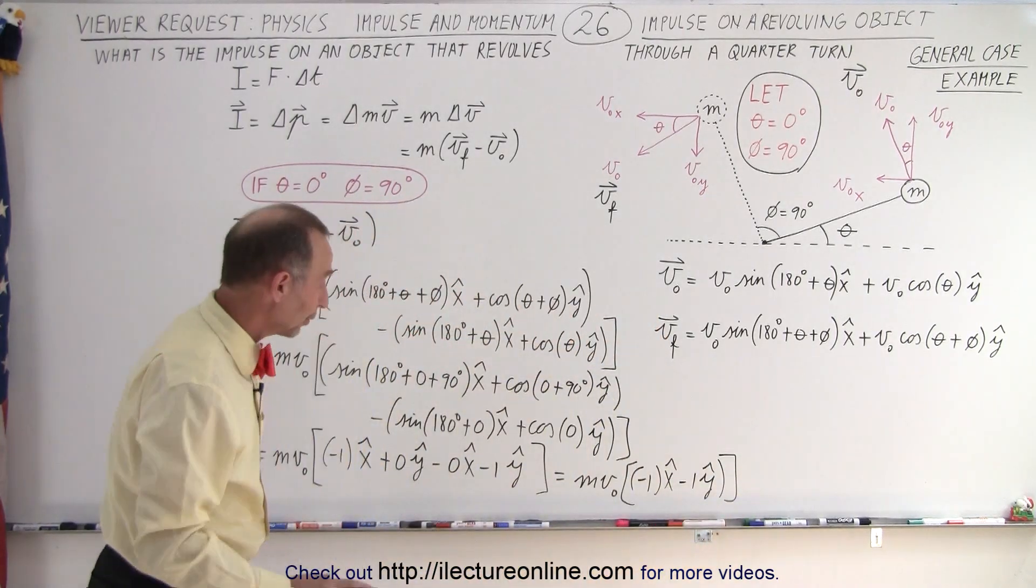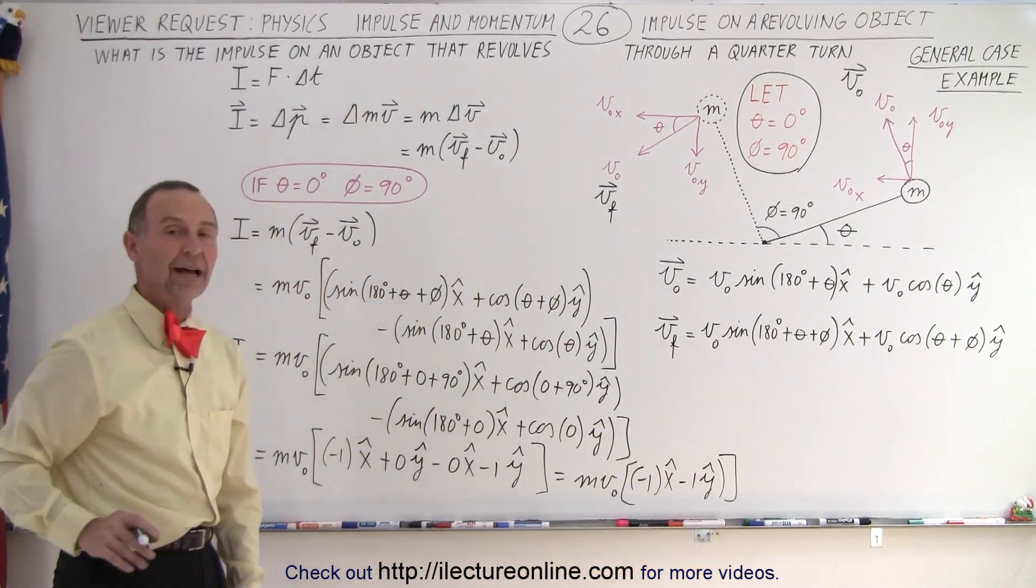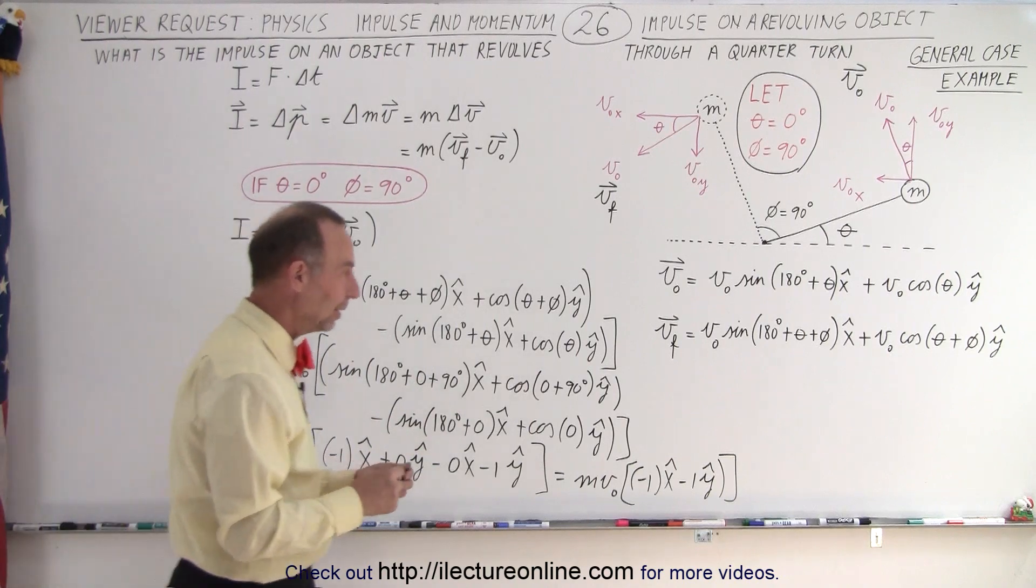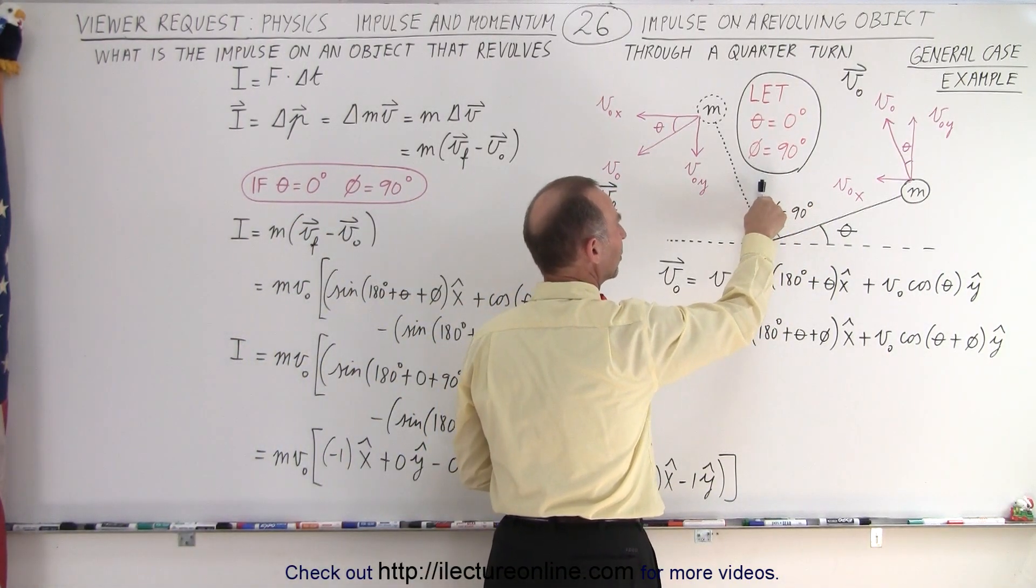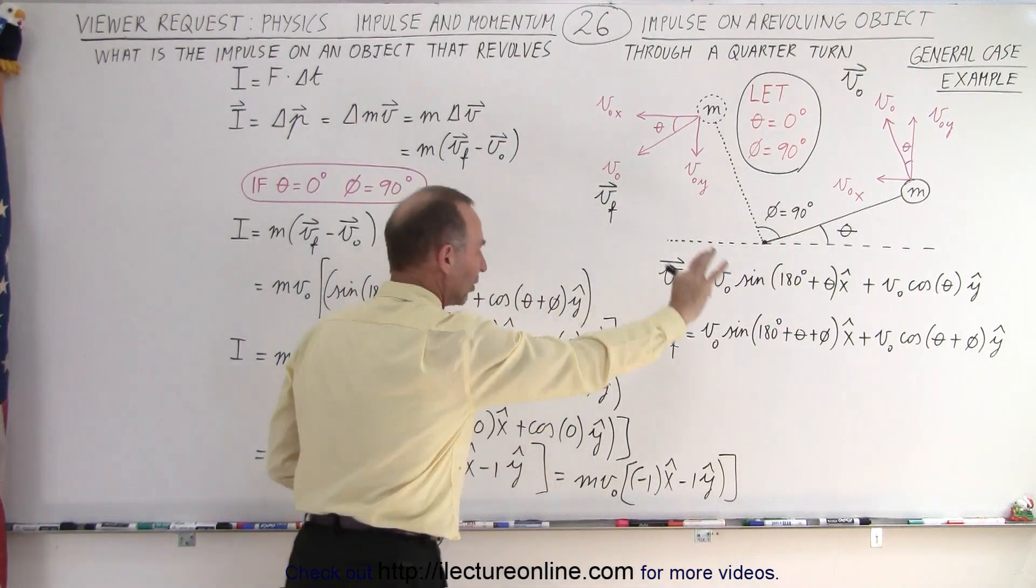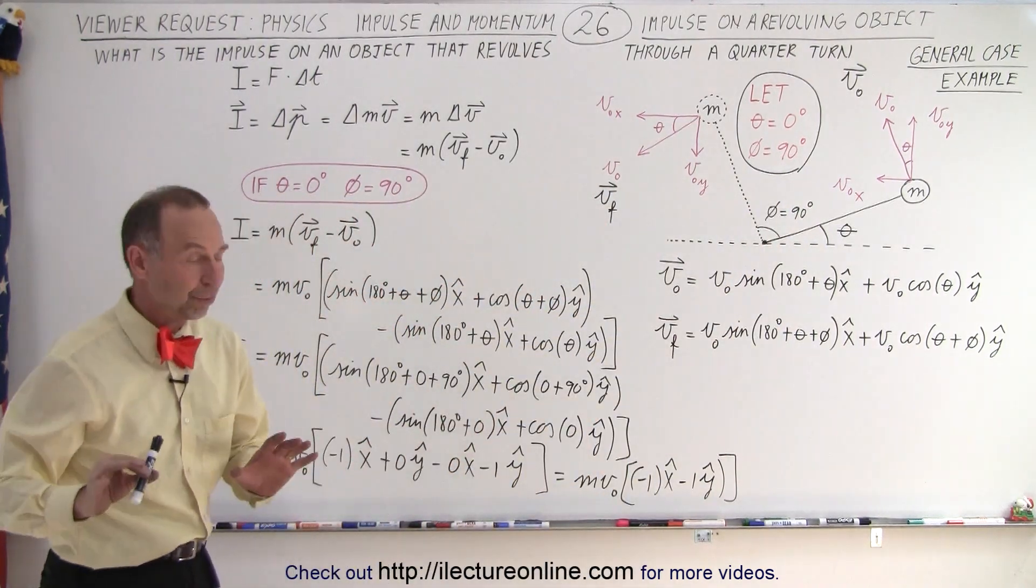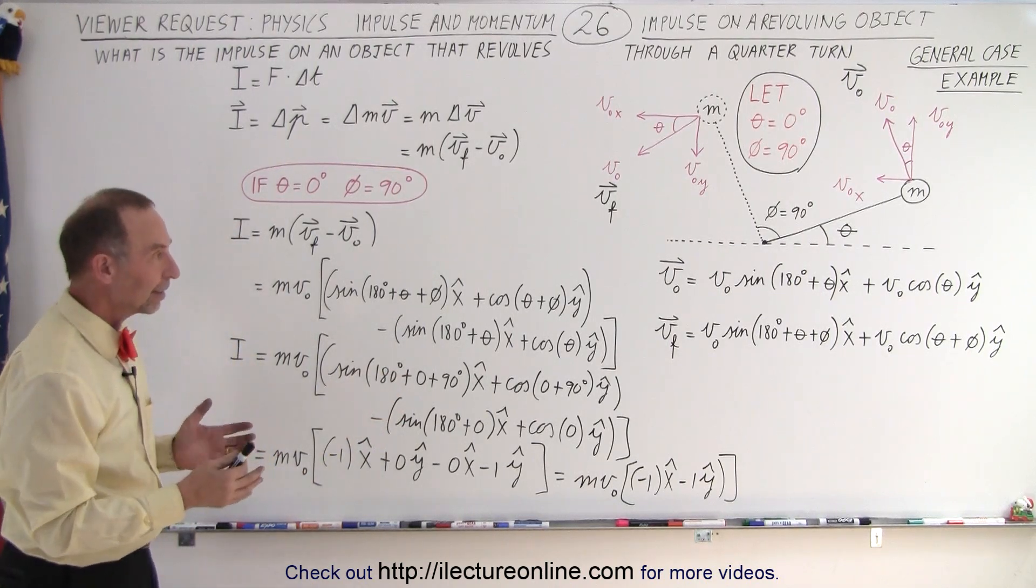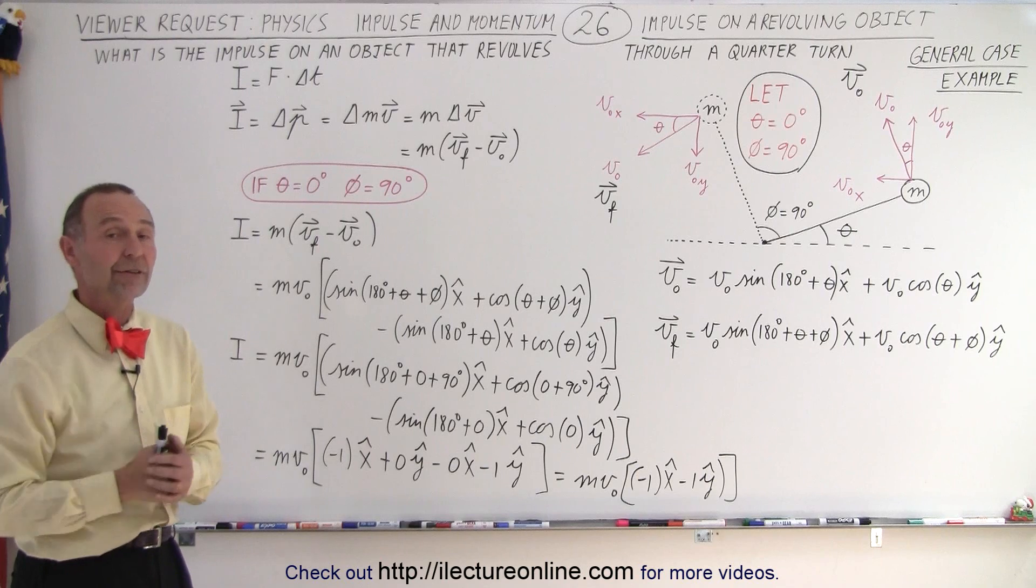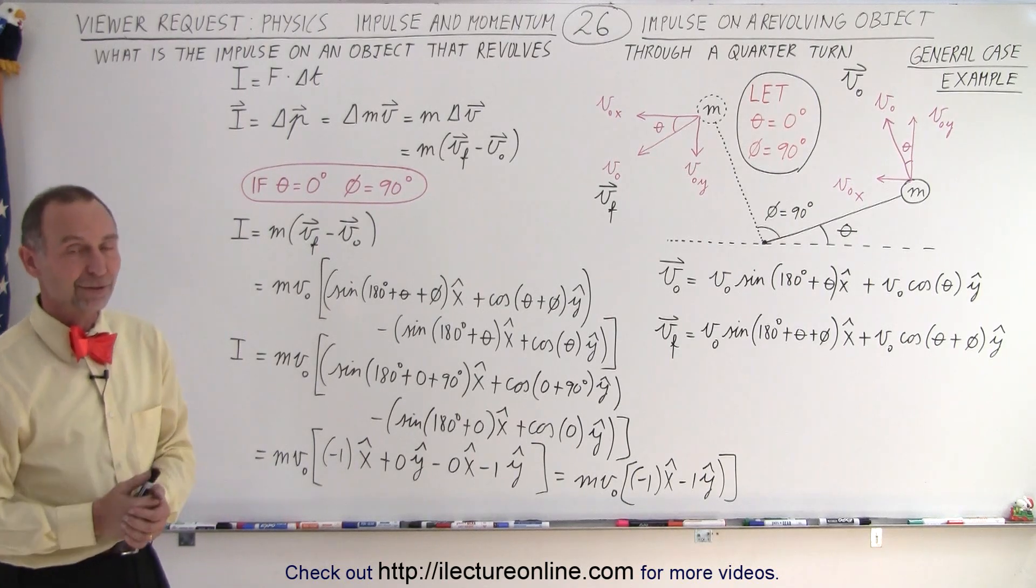And if you go back two videos ago, that was the exact result that we got when we calculated the momentum when we started from the positive x-axis and we rotated through a 90 degree angle. So you can see that the general equation will collapse into any special case equation and give you the correct value for the impulse calculated for a rotating or revolving object. And that is how it's done.